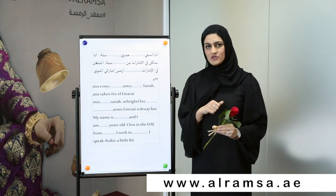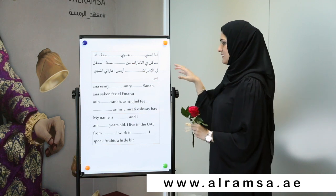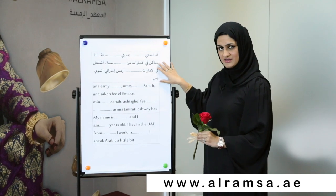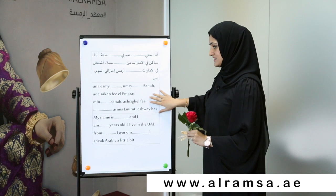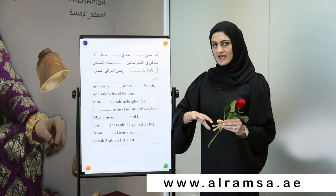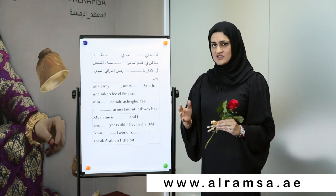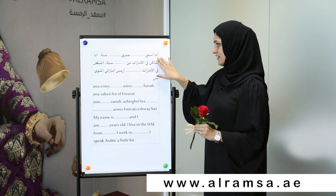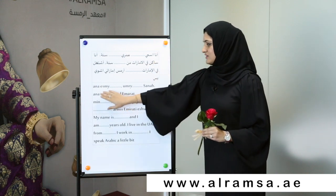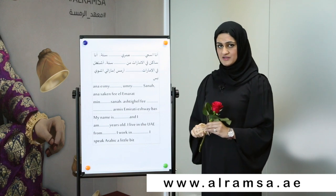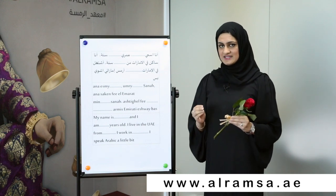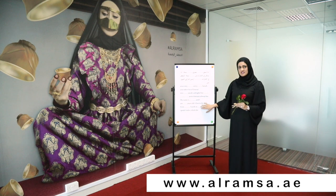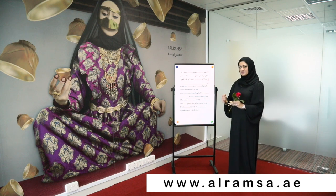So let's go for the lesson. You will see here on the board that we have it in Arabic, we have it in Arabizi — and Arabizi means Arabi plus Inglesi, so it becomes Arabizi. So if you cannot read Arabic like أنا اسمي, you can follow with the Arabizi. And you have the English translation here to support what you are learning today.